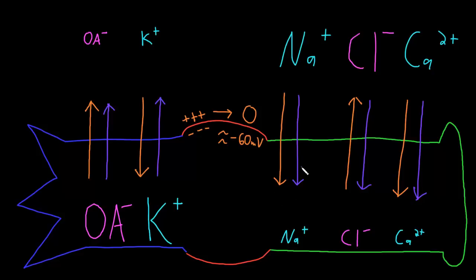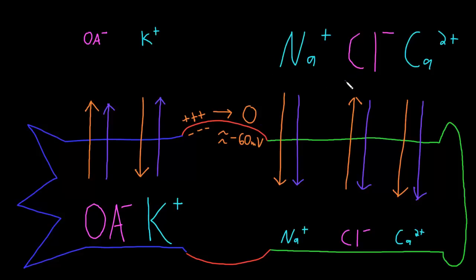These forces we often call electrochemical driving forces for short, and neurons use these forces to perform their functions. In the next video, let's talk about how the resting membrane potential is created and how it's related to the concentration differences of some of these key ions.